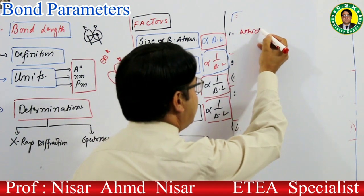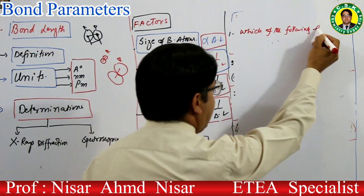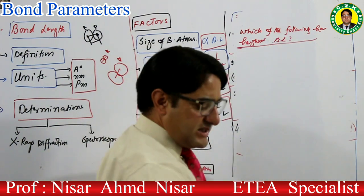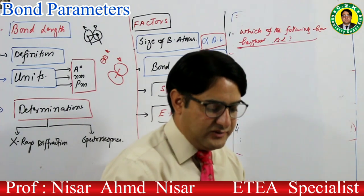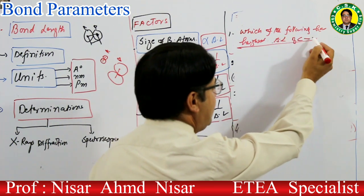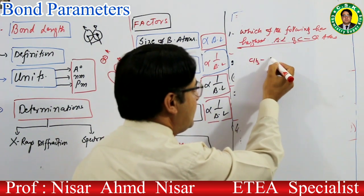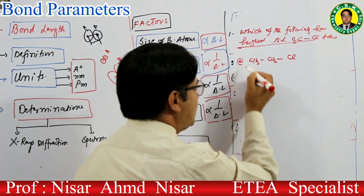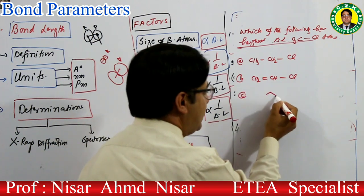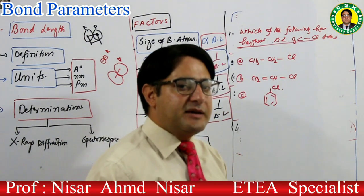MCQ: which of the following has highest bond length of carbon-chlorine bond? Options: (1) CH3-CH2Cl، (2) CH2=CH-Cl، (3) benzene ring-Cl۔ Correct order increasing bond length کا پوچھا جا رہا ہے۔